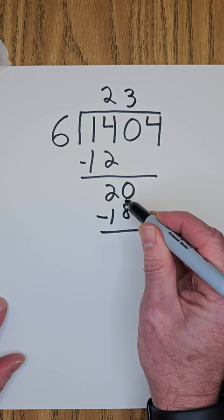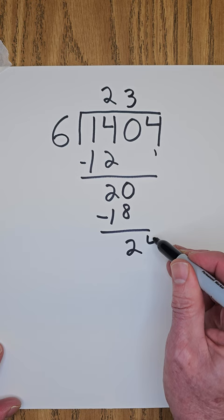Subtract it. 20 minus 18, 2. Bring the next number down. You got 4. How many times can I put 6 into 24? 4 times.